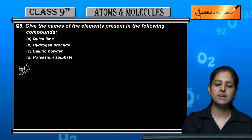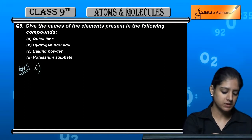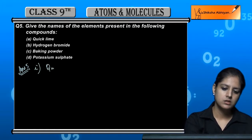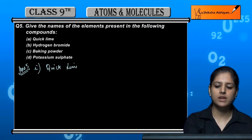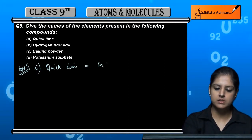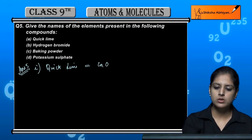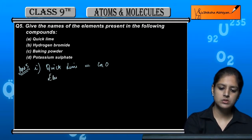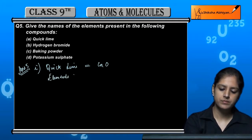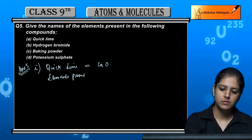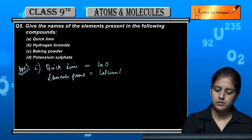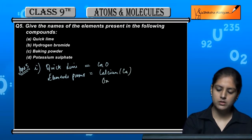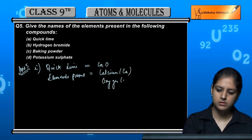First is quick lime. Quick lime's chemical formula is CaO. The elements present are calcium, which is Ca, and oxygen, which is O.